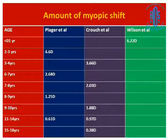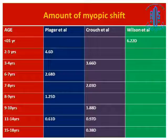Another important factor is the amount of myopic shift. This occurs because the crystalline lens has been removed but the child's eye continues to grow — as the eye grows, hypermetropia decreases and shifts toward myopia. The younger the child, the greater the myopic shift. Wilson et al. calculated about 6.22 diopters of myopic shift in infants, while Pleasance et al. calculated about 4.6 diopters in children between 2 to 3 years of age. As age increases, the amount of myopic shift decreases.